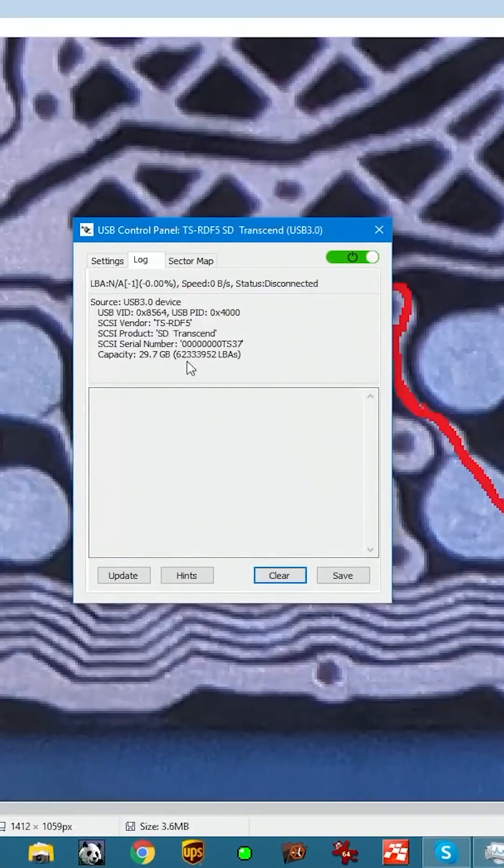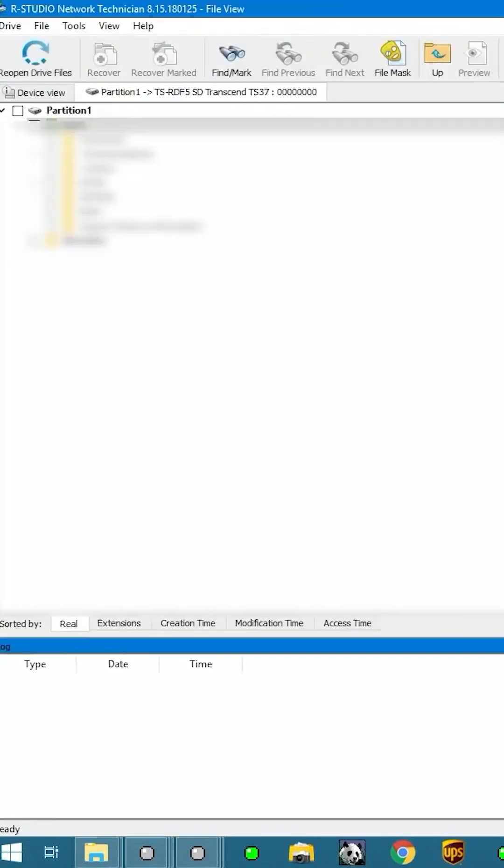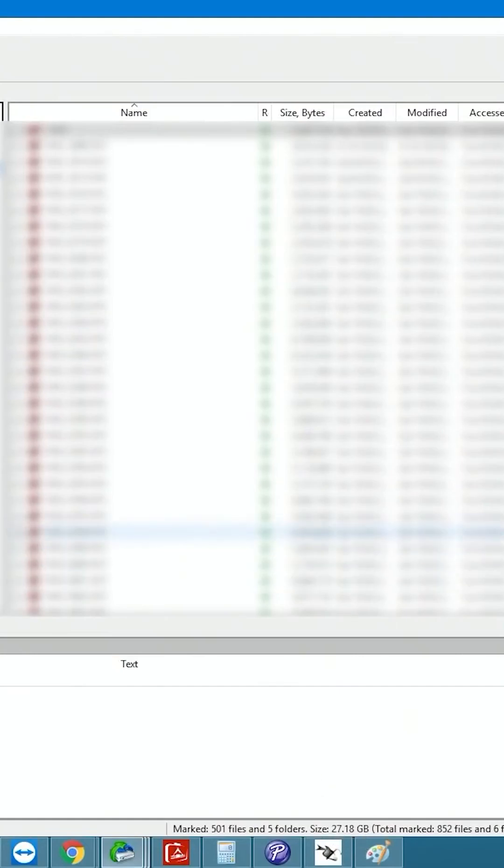Power up the unit, we get 30 gigs recognized as SD Transcend. If I explore it, the selection drops down to 27 gigs, which is what it should be on a 32 gigabyte device.